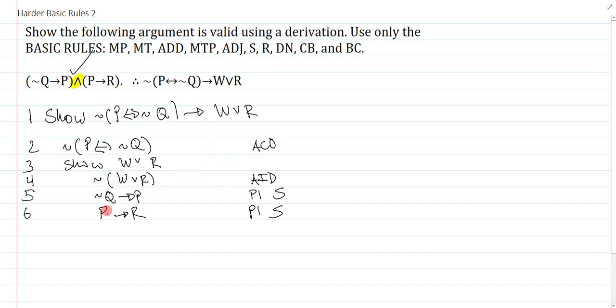So now I look at my automatic moves. Line two is the negation, but it's a negation of a biconditional, so I can't do anything to it. However, this is an important line, so I'm going to put a star because you should recognize this as a contradiction generator. Line four is also a contradiction generator. It's the negation of a disjunction. And line five is a conditional, and line six is a conditional.